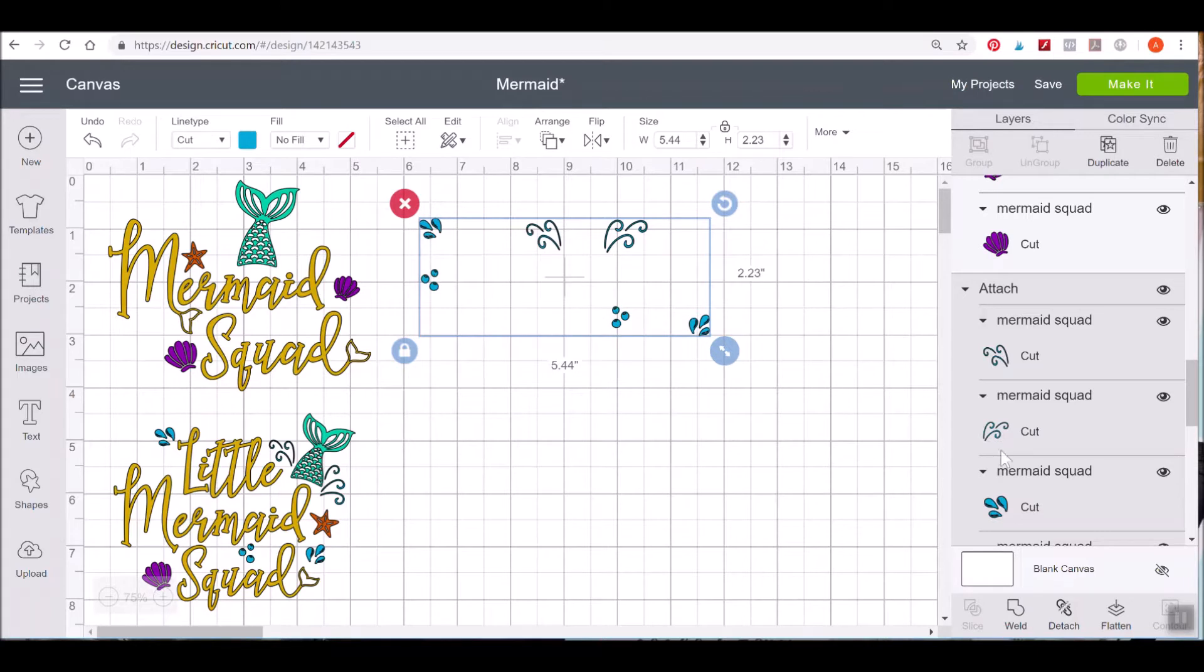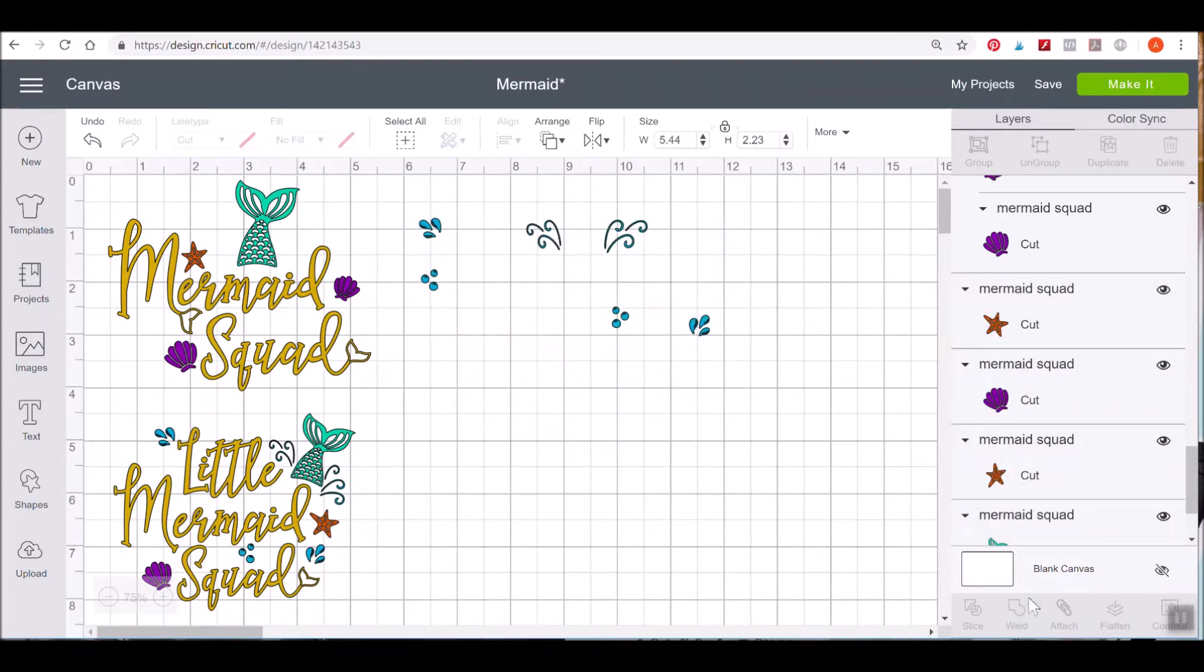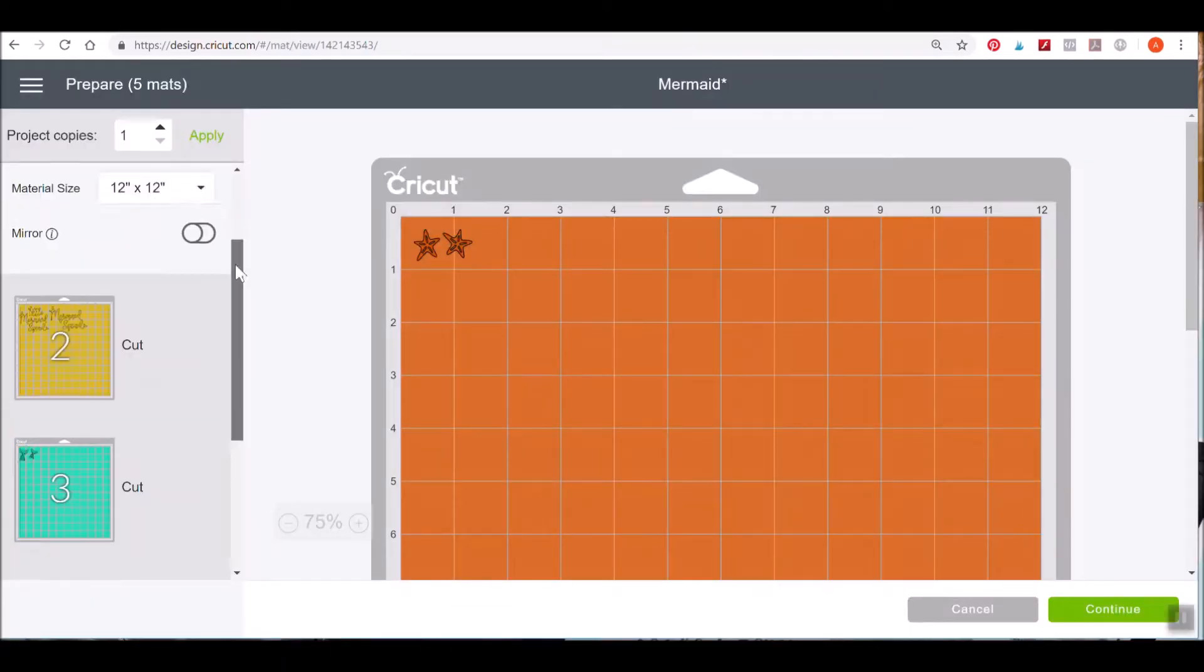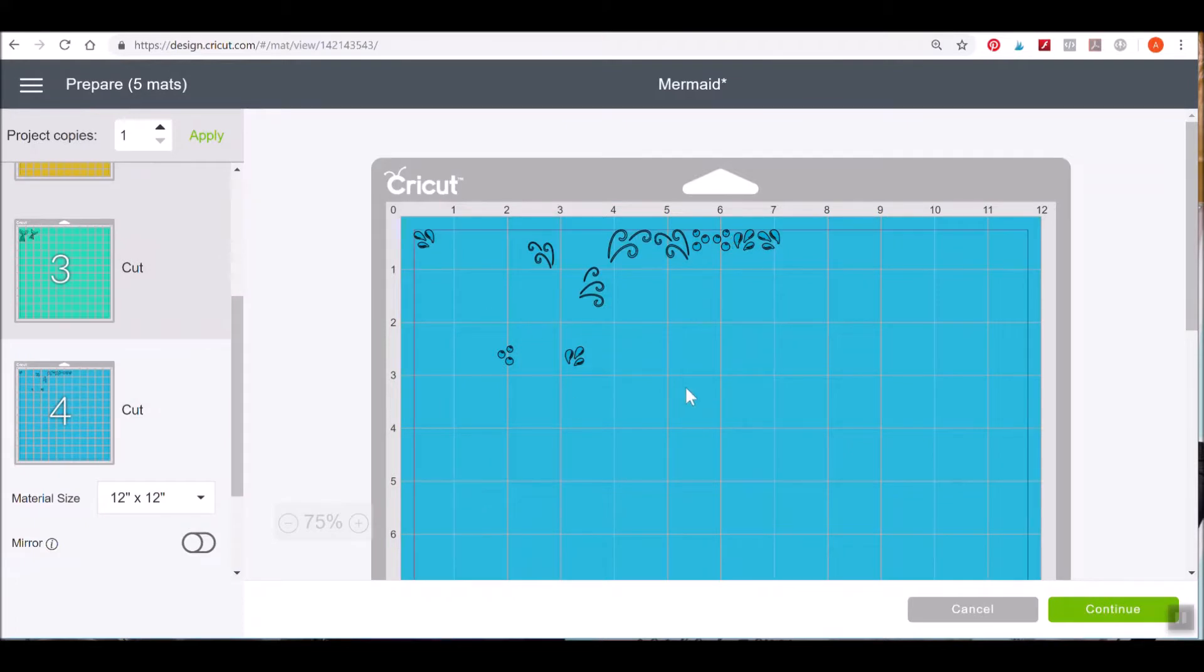If I were to detach these items and we were to go to the cut screen, you would see them all jumbled. You see how they're all jumbled right here?